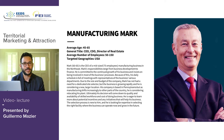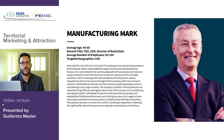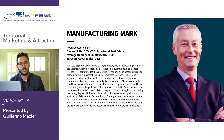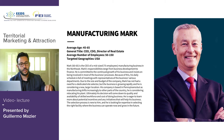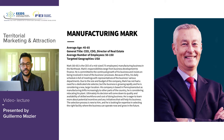For example, here's one we made up for a test case — his name is Manufacturing Mark. He's 45 to 65 in age, his title could be COO, CEO, or Director of Real Estate, he has around 50 to 150 employees, and he's in the manufacturing industry in the United States. His responsibilities range from business development to finance — he's committed to the growth of his business and insists on being involved in most business processes.